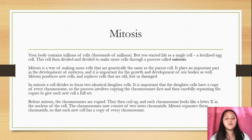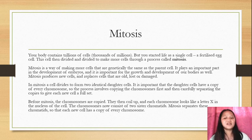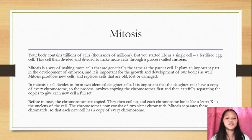Before mitosis, the chromosomes are copied. They then coil up and each chromosome looks like a letter X in the nucleus of the cell. The chromosomes now consist of two sister chromatids. Mitosis separates these chromatids so that each new cell has a copy of every chromosome.